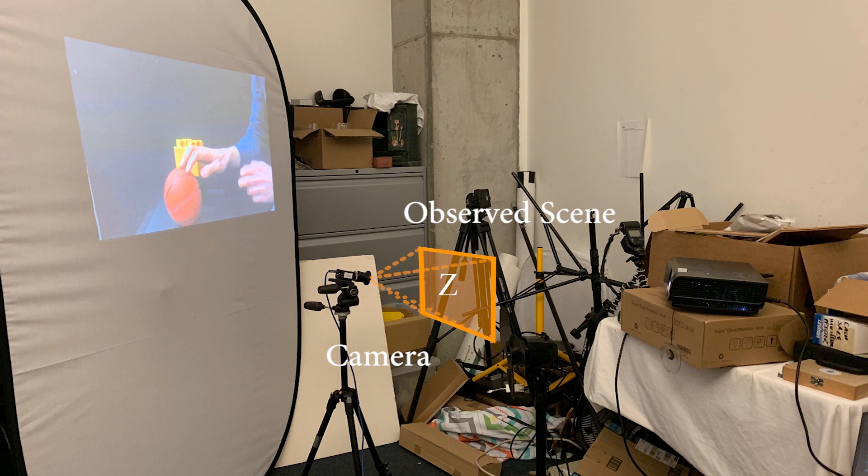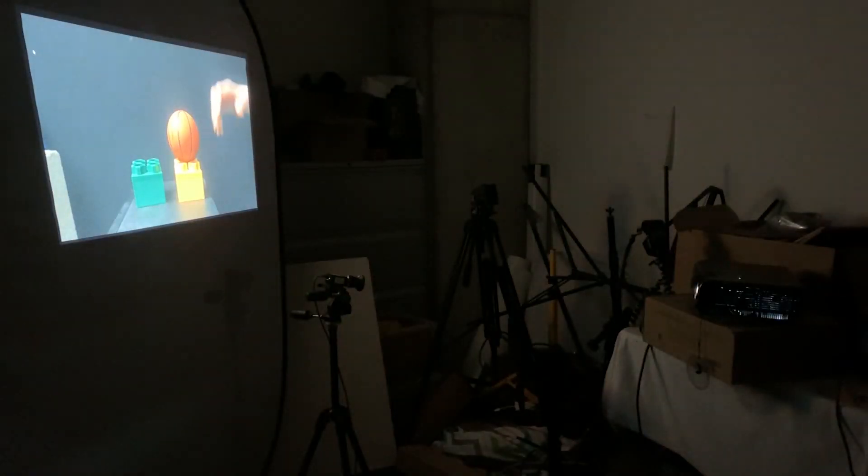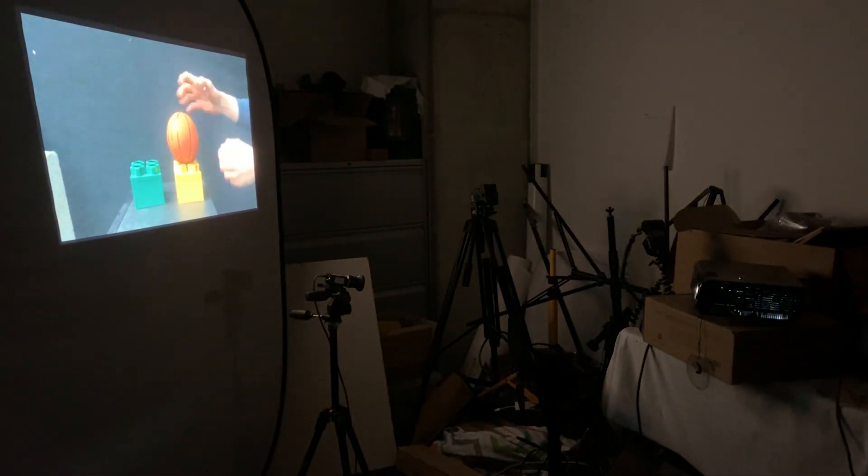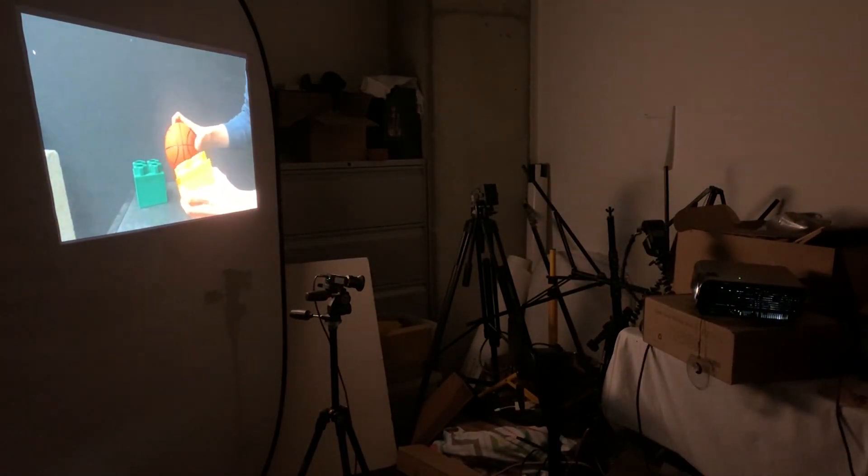In our experiments, we focus on a setup where a camera records a scene, for example this pile of clutter, while outside the view a hidden video is being projected on a wall. Notice how the shadows and shading on the observed scene move in response to the changing contents of the hidden video.